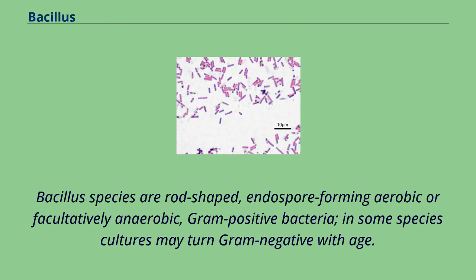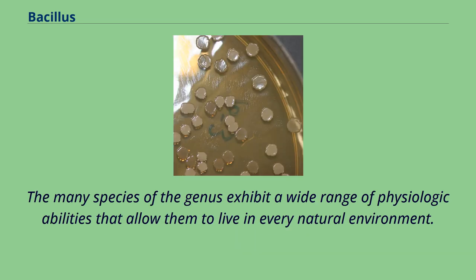Bacillus species are rod-shaped, endospore-forming, aerobic or facultatively anaerobic, gram-positive bacteria. In some species, cultures may turn gram-negative with age. The many species of the genus exhibit a wide range of physiologic abilities that allow them to live in every natural environment.